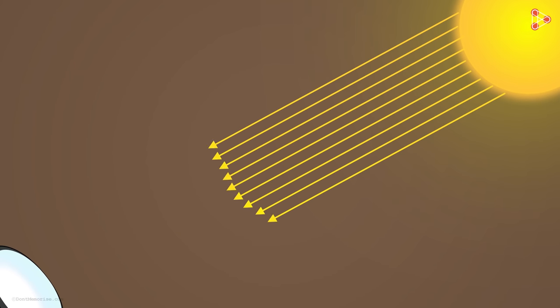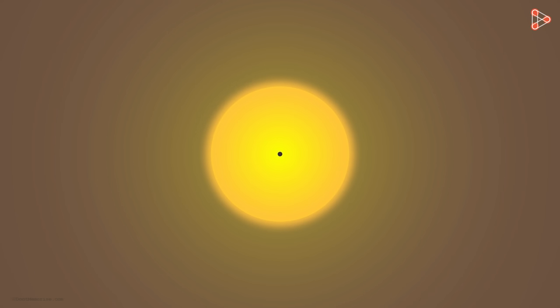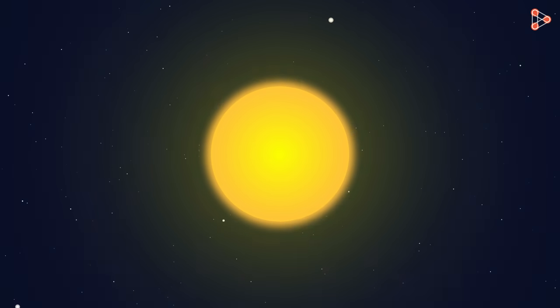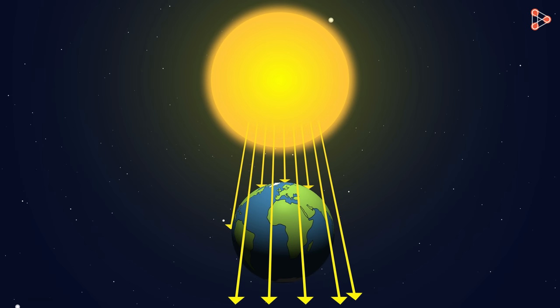Let's take the sun as our object. Why? Because we want only parallel rays of light to be incident on the mirror, and the rays of light from the sun can be considered almost parallel. Being a sphere, the sun emits light radially outwards — rays travel outwards along the radius. But the sun is at a very large distance from the earth, so the rays coming towards the surface of the earth are considered parallel.